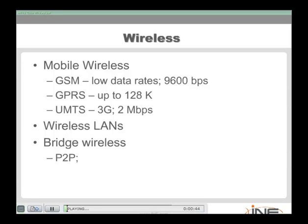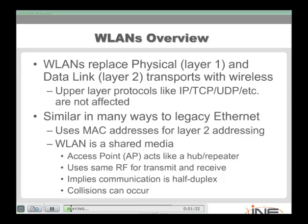When we talk about wireless, we're talking about mobile wireless like 3G technology where we can send data via mobile phones at up to 2 megabits per second, or wireless local area networking technology, which is our focus in this course, or setting up two antennas on different buildings pointing Wi-Fi signals at each other to bridge those LANs together — getting around 40 megabits per second in a pure point-to-point fashion. For CCDA, the focus is definitely wireless local area networks.